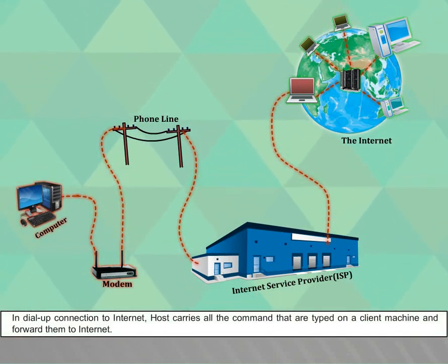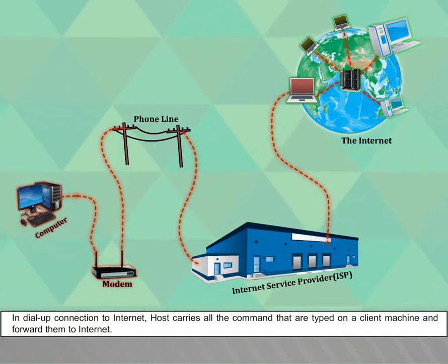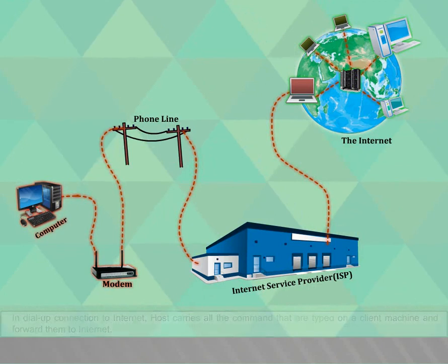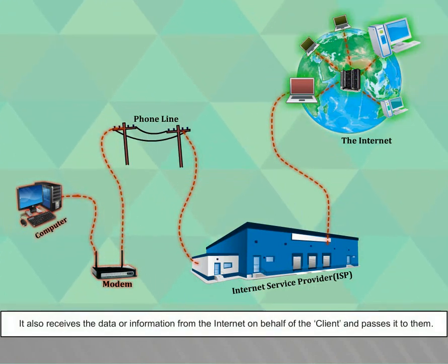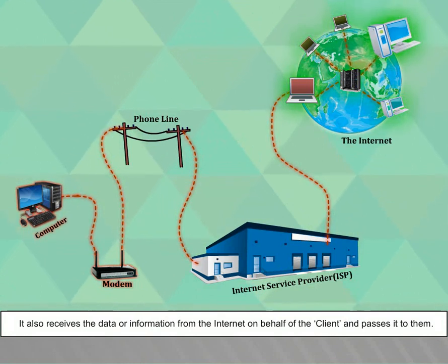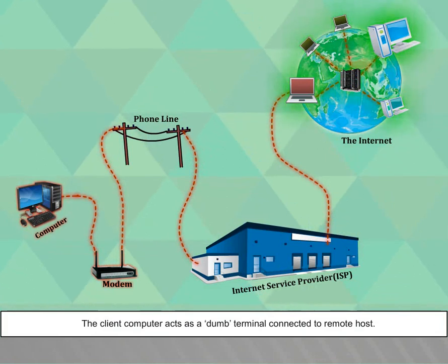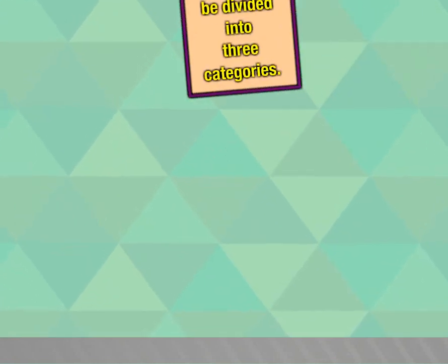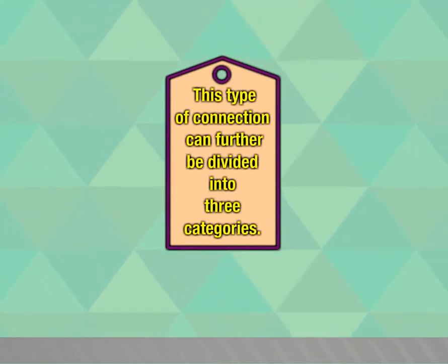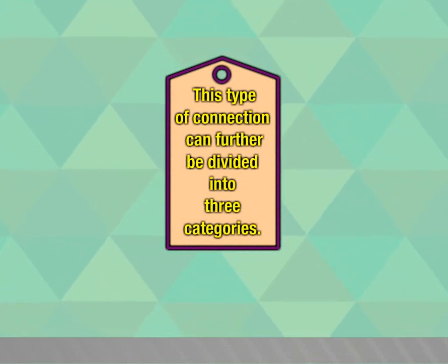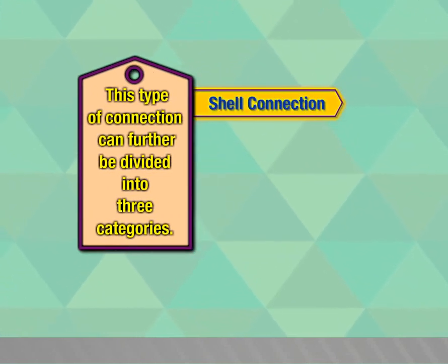In a dial-up connection to the internet, the host carries all the commands that are typed on a client machine and forwards them to the internet. It also receives data or information from the internet on behalf of the client and passes it to them. The client computer acts as a dumb terminal connected to a remote host. This type of connection can further be divided into three categories: Shell connection, TCP/IP connection, and ISDN.